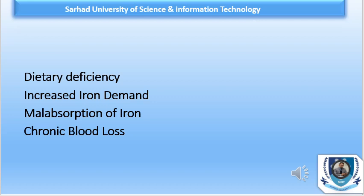Increased iron demand occurs during the growth phase of early childhood and during pregnancy, so dietary iron supplements are essential during these times. If the diet is deficient in iron, it cannot provide the required amount and leads to iron deficiency anemia. Malabsorption of iron may occur in severe generalized malabsorption states such as celiac disease and tropical sprue. It also occurs after gastrectomy because gastric acid is necessary for iron absorption.